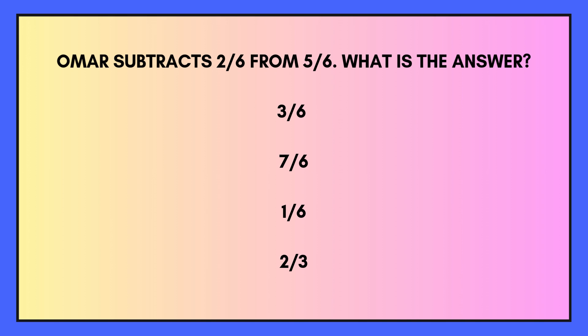Next question: Omar subtracts 2 sixths from 5 sixths. What is the answer? So all you need to do is deduct 2 from 5 and keep the same denominator. Our options are 3 sixths, 7 sixths, 1 sixths, or 2 thirds. Pause the video if you need a moment to think.